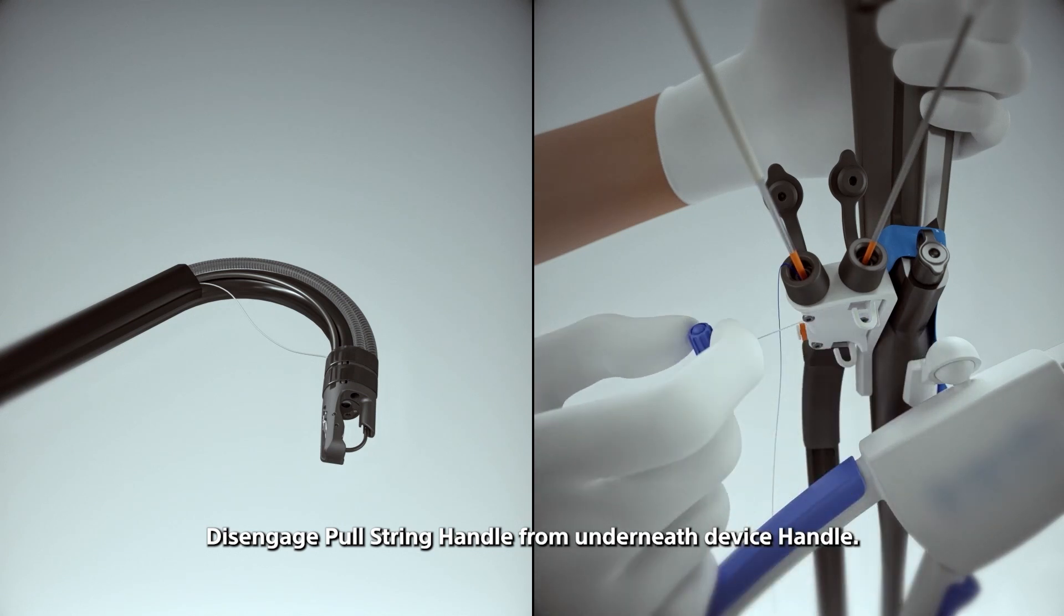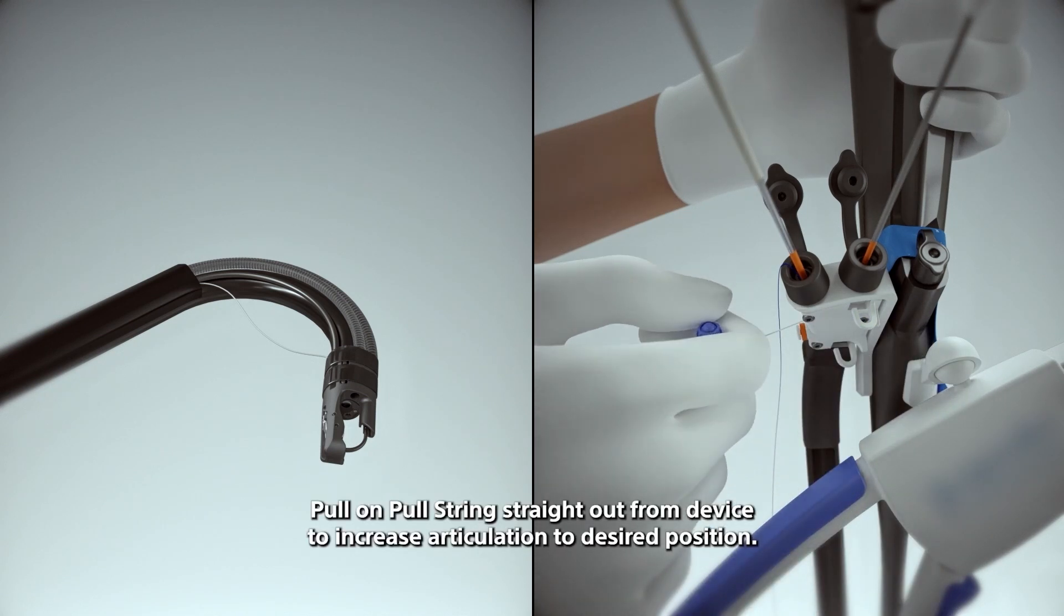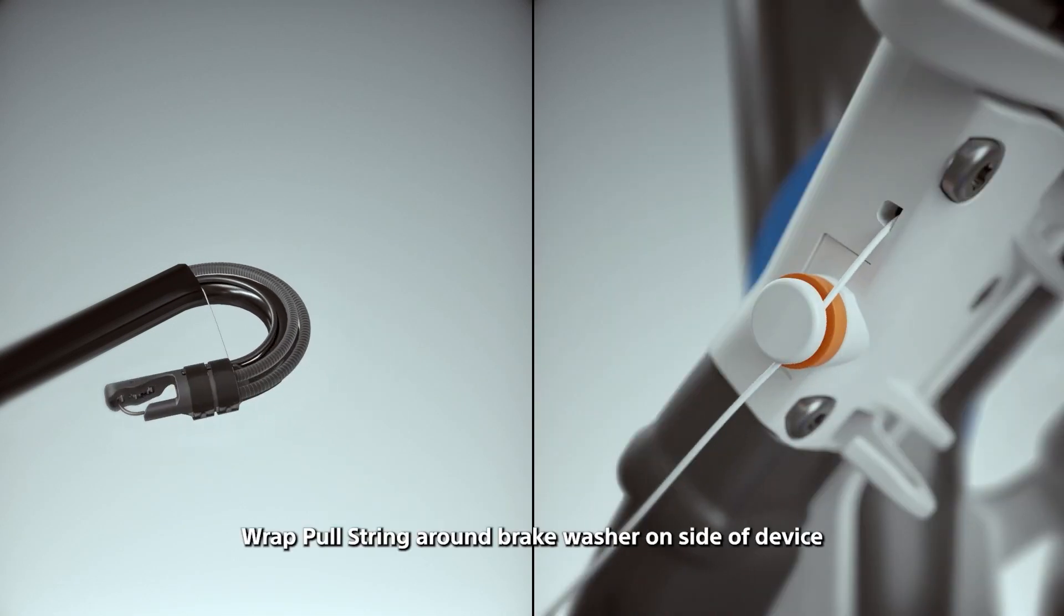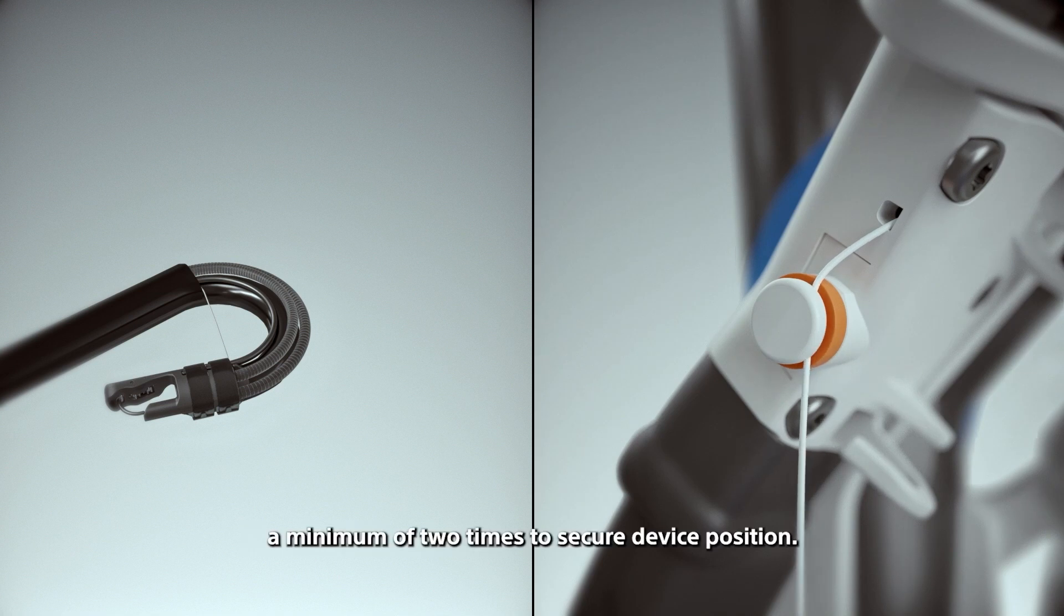Disengage pull string handle from underneath the vice handle. Pull on pull string straight out from device to increase articulation to desired position. Wrap pull string around brake washer on side of device a minimum of two times to secure device position.